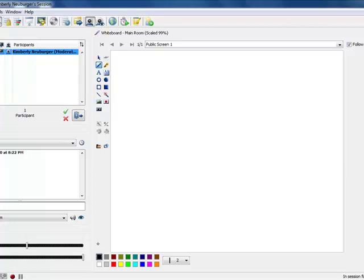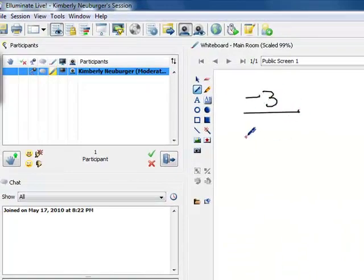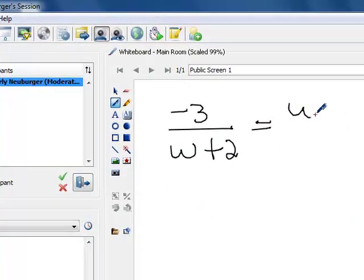Now let's take a look at one other special kind of problem that is also a rational expression. All right, this rational equation is going to be negative 3 over w plus 2 equals w over w plus 2.